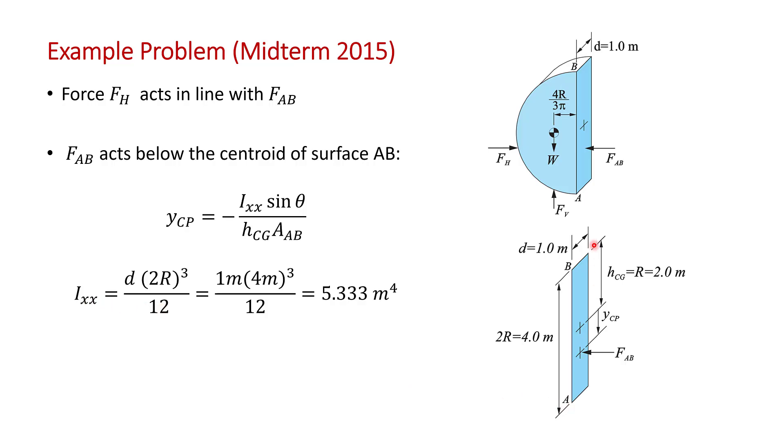This surface here, AB, has depth of one meter and height of four meters. So it's the depth times height cubed divided by 12. And we get a second moment of area, the moment of area around a horizontal axis passing through the centroid of 5.333 meters to the fourth. And now it's just a matter of making the substitutions.